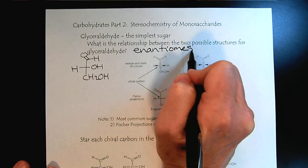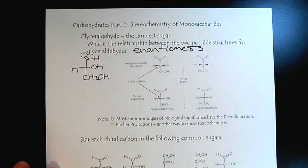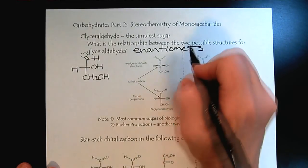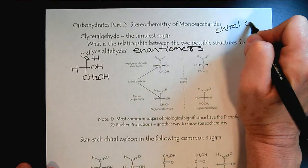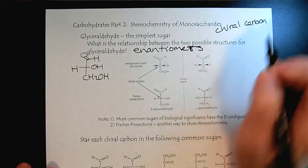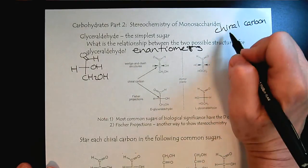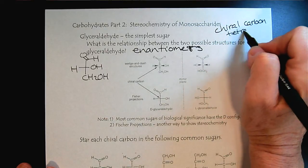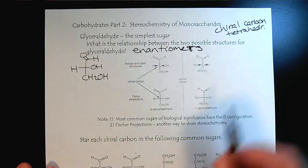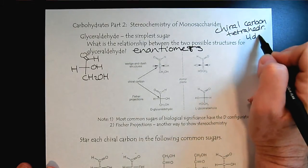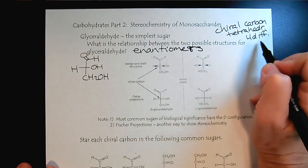And so now I wanted to use some models to help illustrate this idea. So remember enantiomers come if we have a chiral carbon, and the chiral carbon has a tetrahedral carbon, bonded to four different groups.